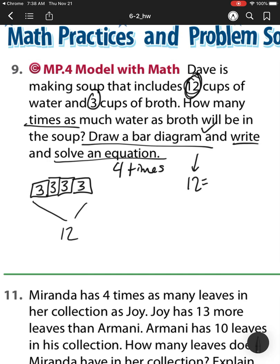However, I've only done this part, and it says I also need to write and solve an equation. So my equation would be 12, because that's what I'm looking for. I'm looking for that 12 cups is equal to a mystery number. So I'm going to use c for cups, times 3. And that 3, remember, is because it's 3 cups of broth. And then I know 4 times 3 is equal to 12. So I would need 4.